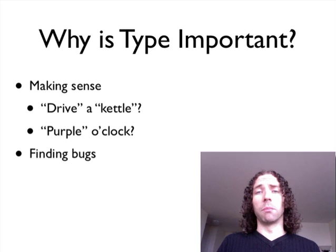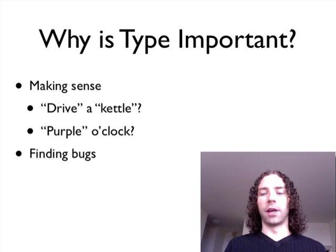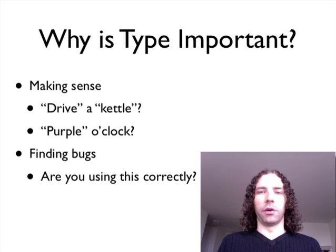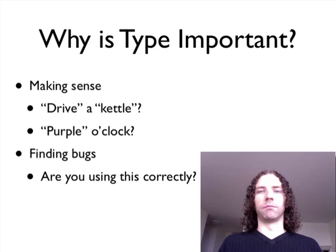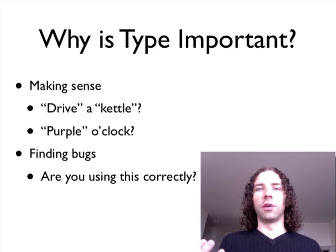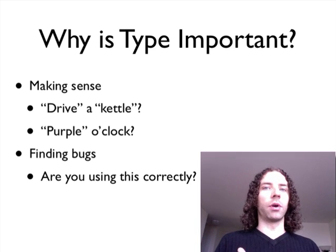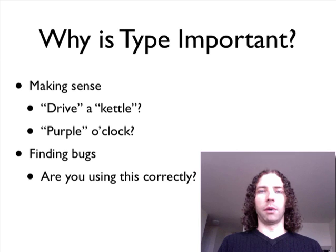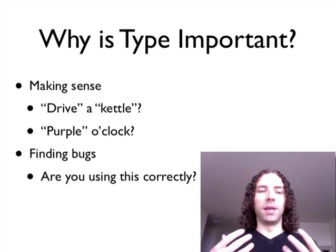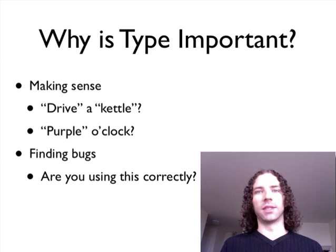And when it comes to computer programming, it matters a lot when you're finding bugs. Because type tells you: are you using this correctly? For example, if you're trying to say count me the first some number of things out of this list, it's expecting you to give it a number — like give it three. But if you give it something like purple or the sky, it's not going to make any sense. That's where type is important because you can very obviously determine that something is not being used correctly because you didn't even give it the right kind of thing.